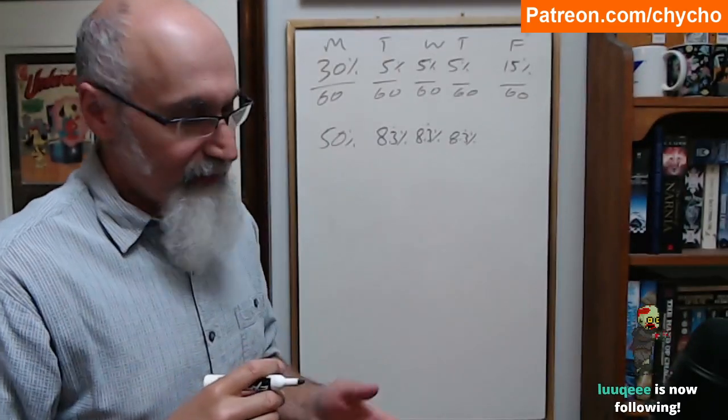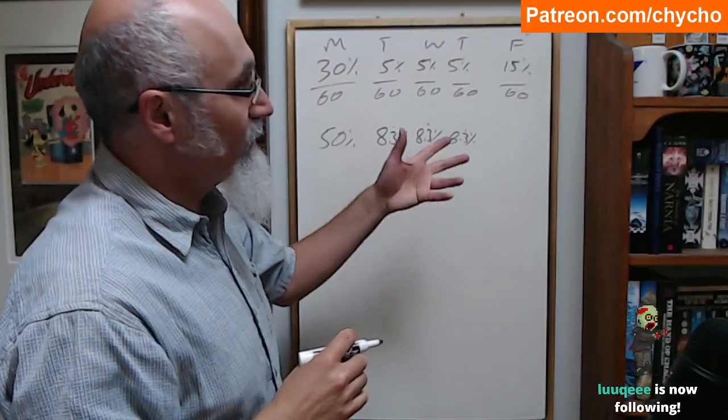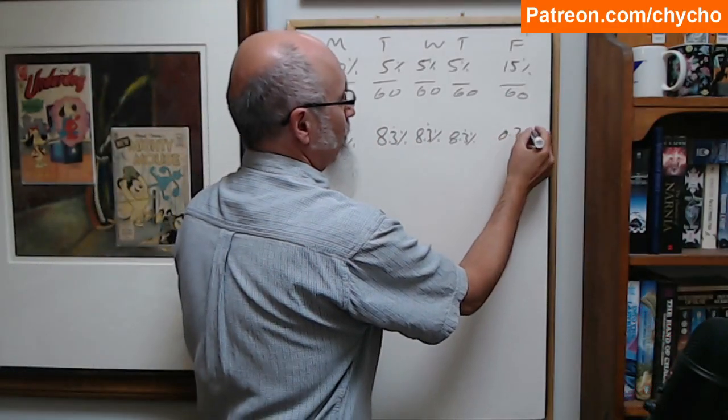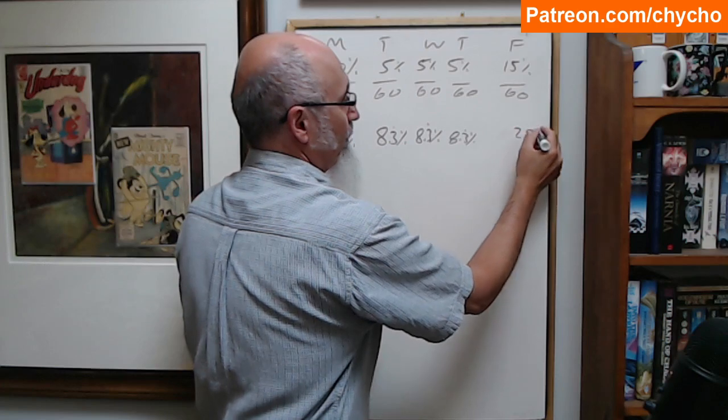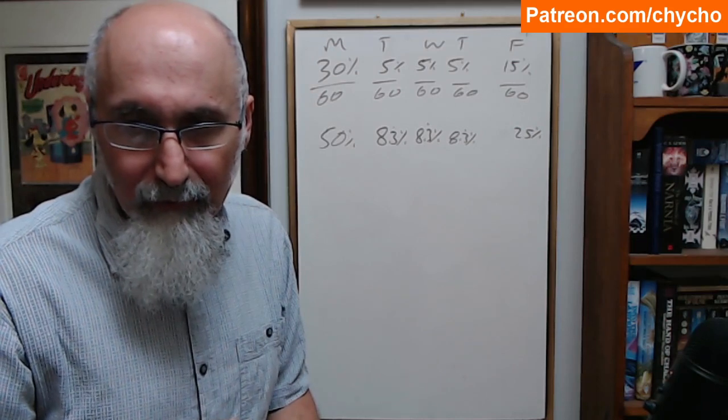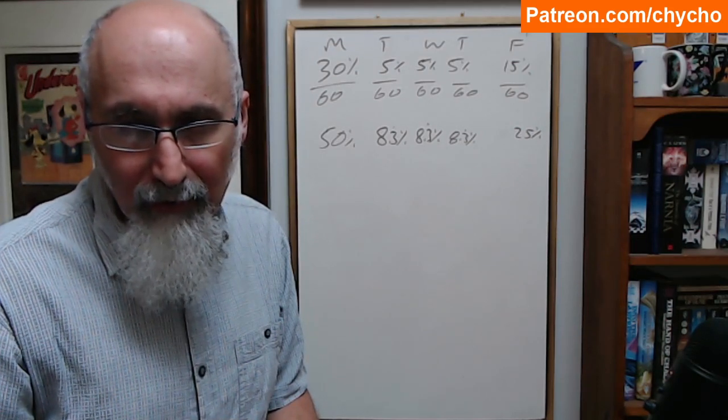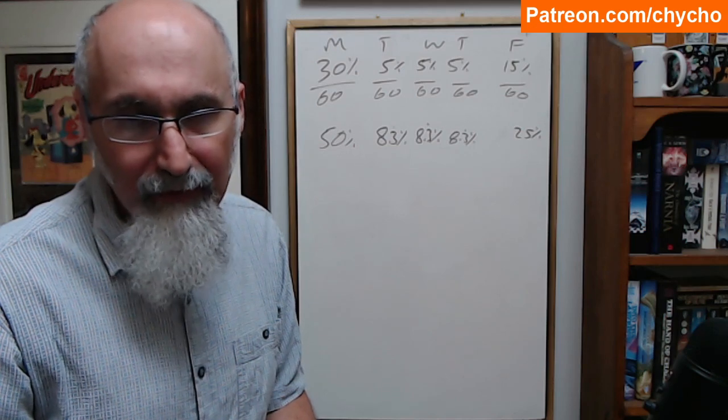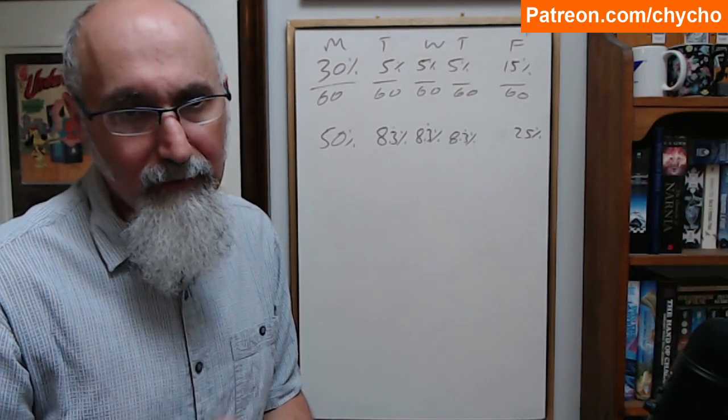And 15 divided by 60. What is that? Quarter. 25%, right? 0.2. Well, 25%. So, the question is, what's the question? What is the probability that the mistake was made on a Monday? 50%. That's all.